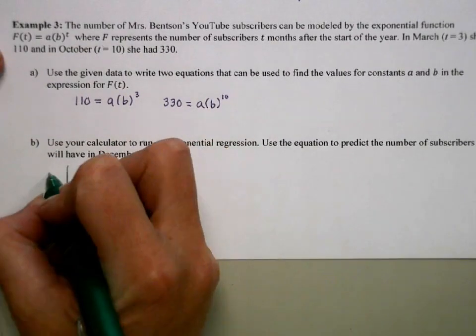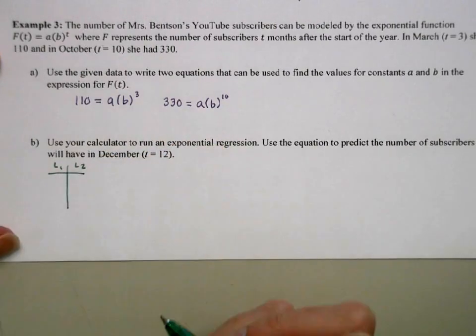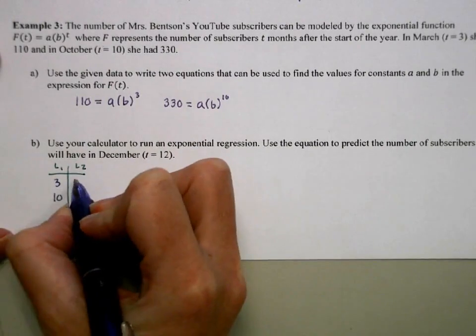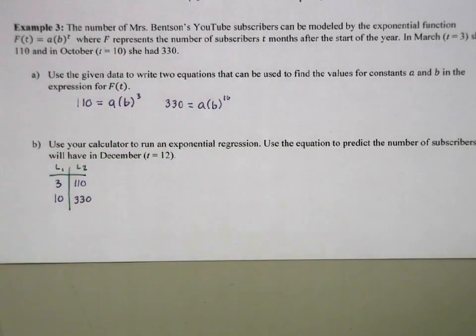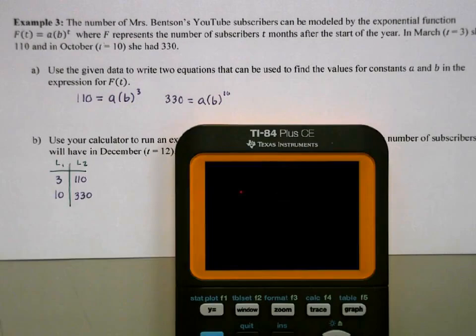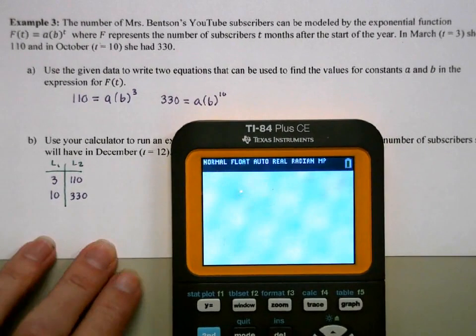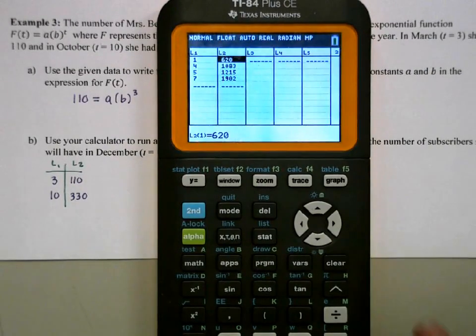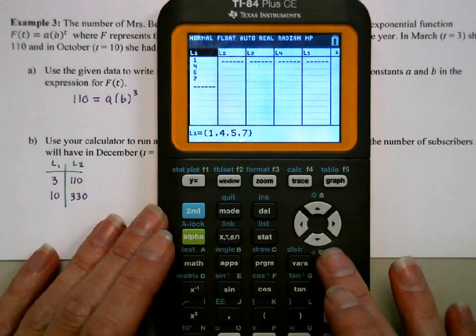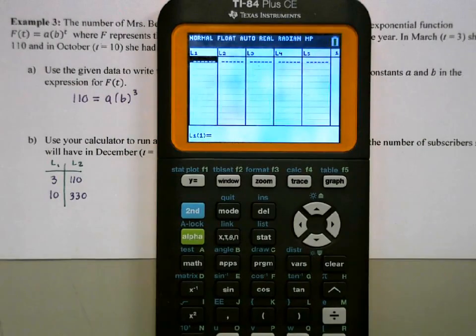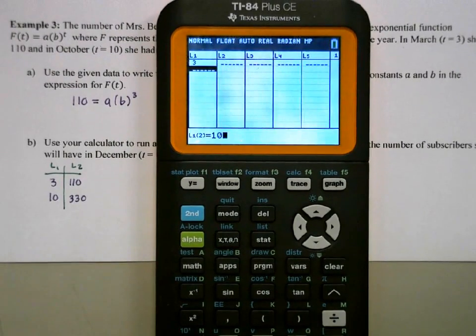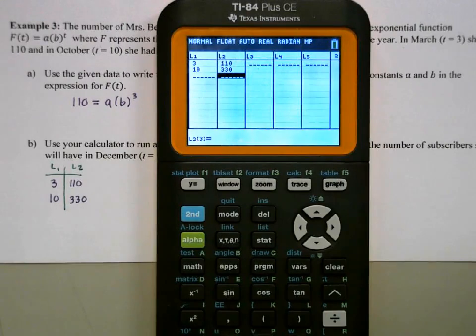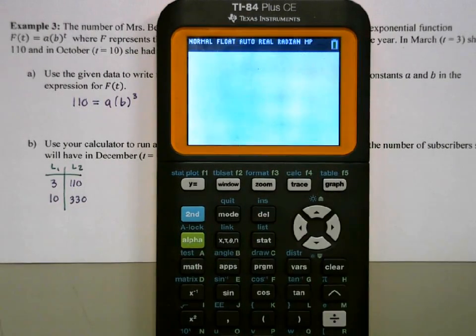In my data, in my table, and I'll do this on the calculator in a second, in list 1 and list 2, in list 1 we're going to have the months 3 and 10, and in list 2 we're going to have our outputs, the number of subscribers. And we can do this with just 2 points. So in the calculator, for the TI-84, we're going to use the stat menu and you're going to edit. If you have stuff in here, we're just going to clear that out by highlighting the list and clearing. So I'm going to have 3 and 10, and over here I'm going to have 110 and 330.